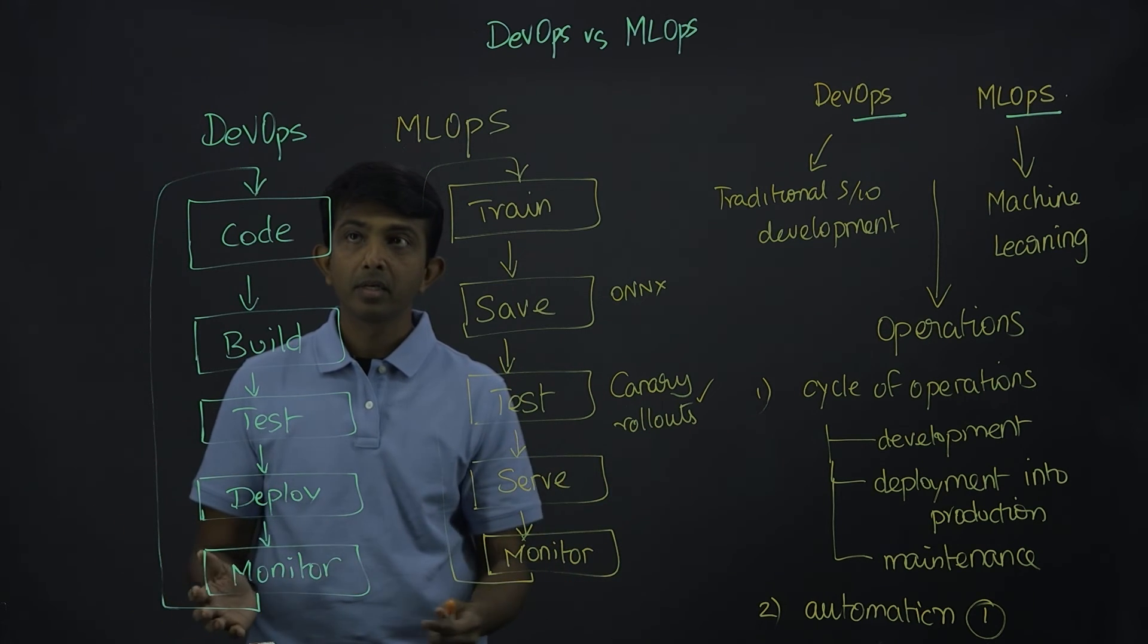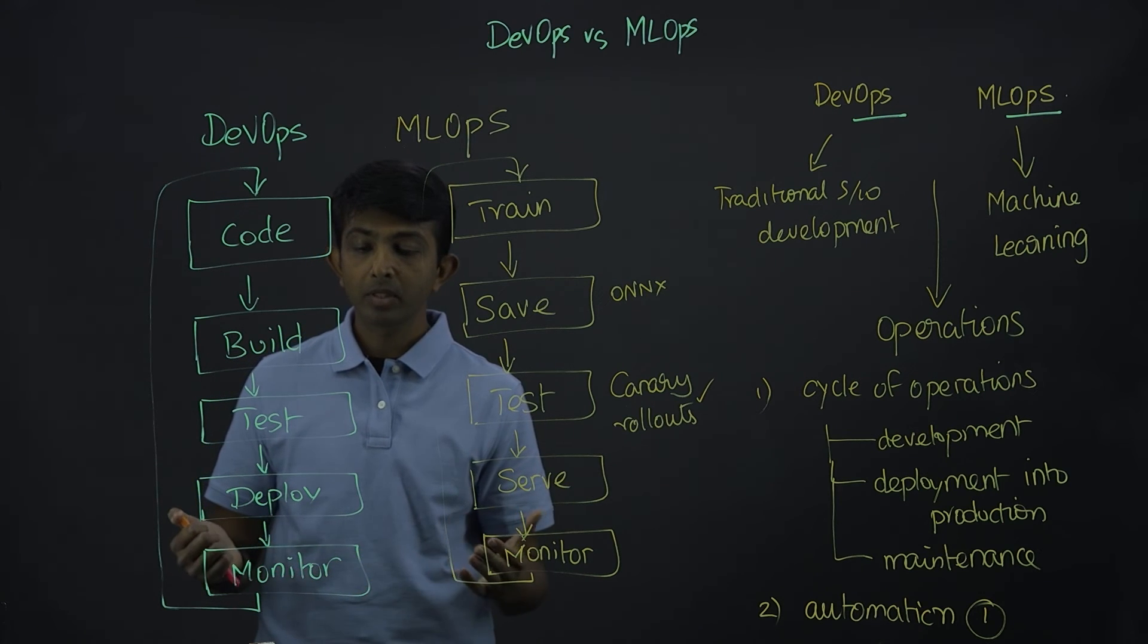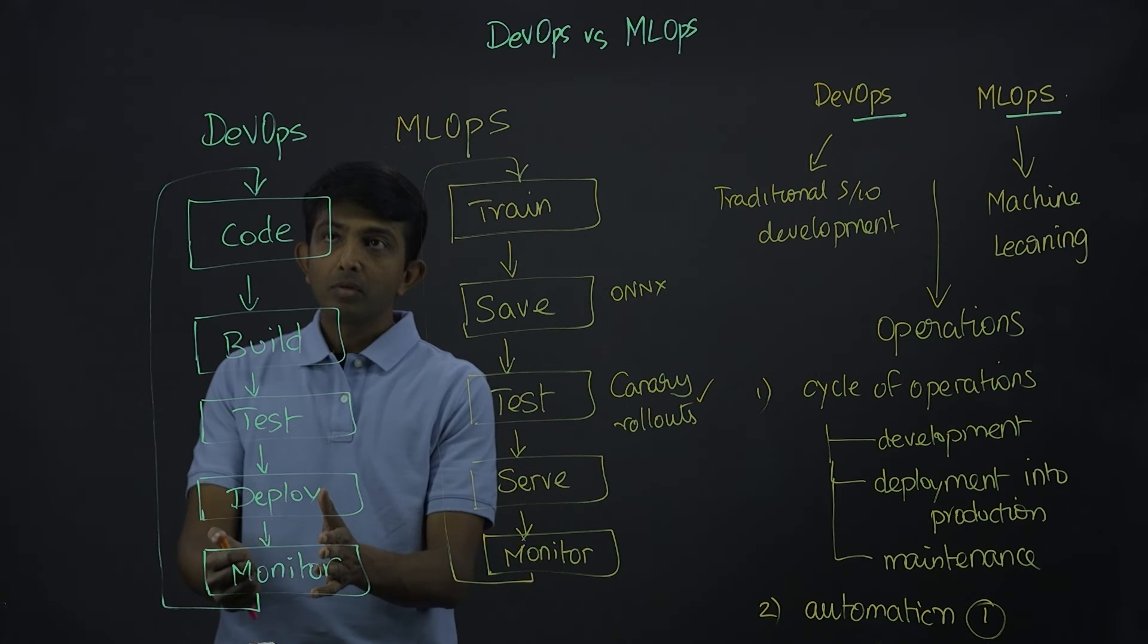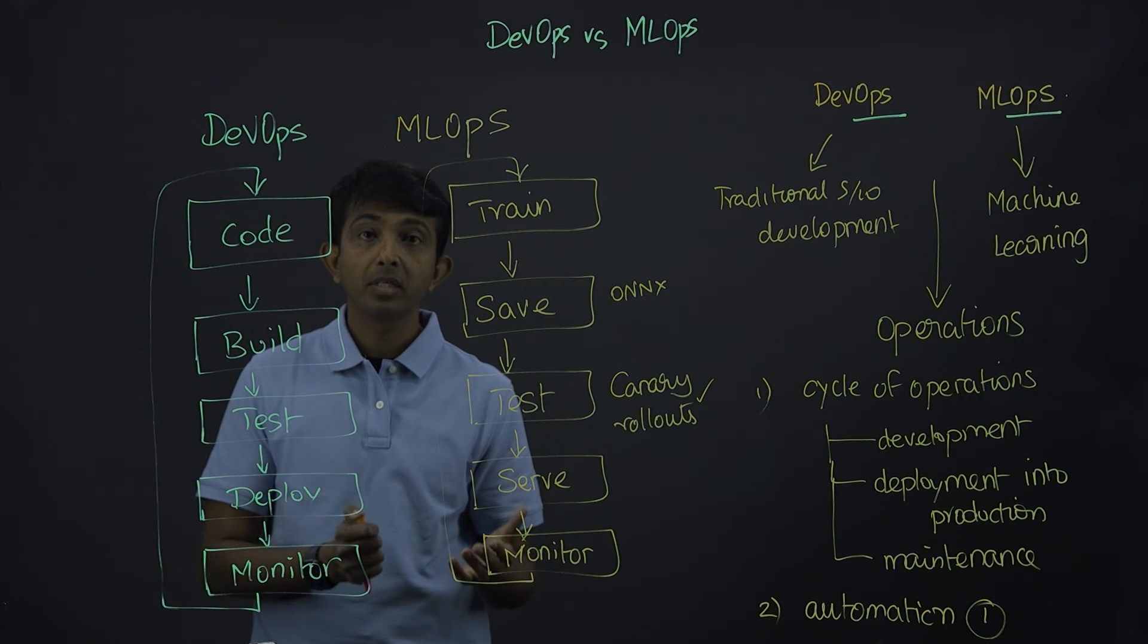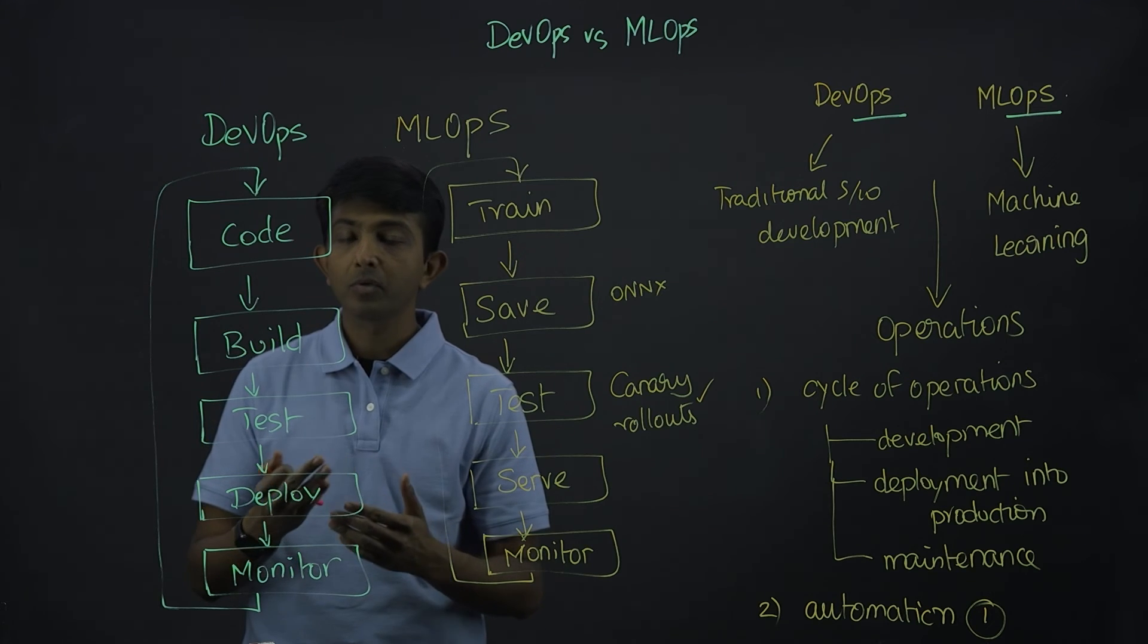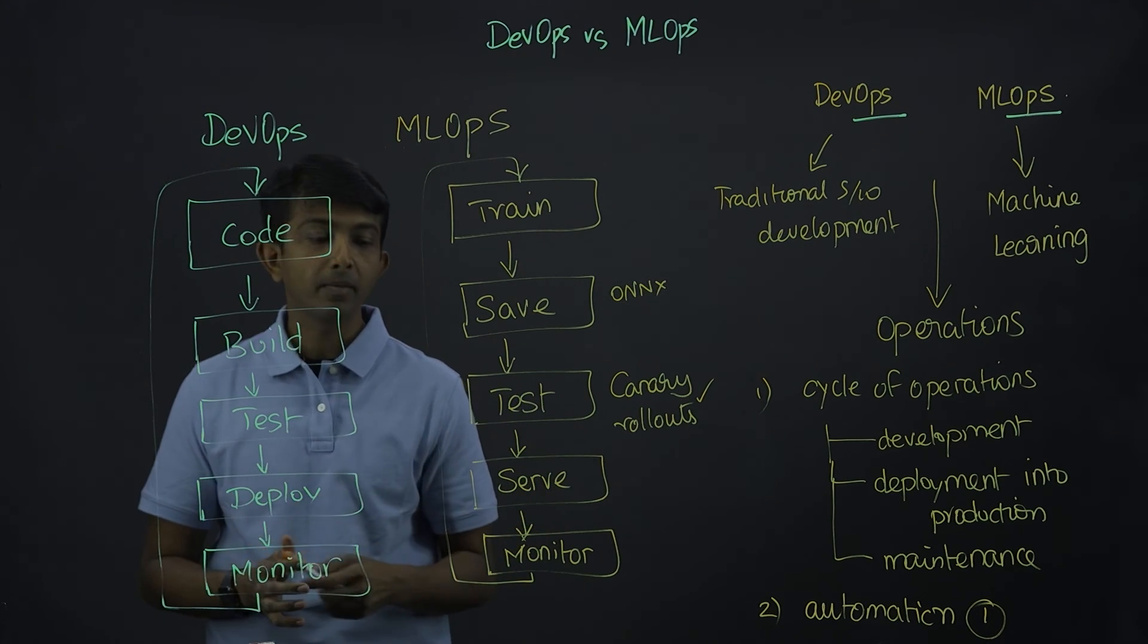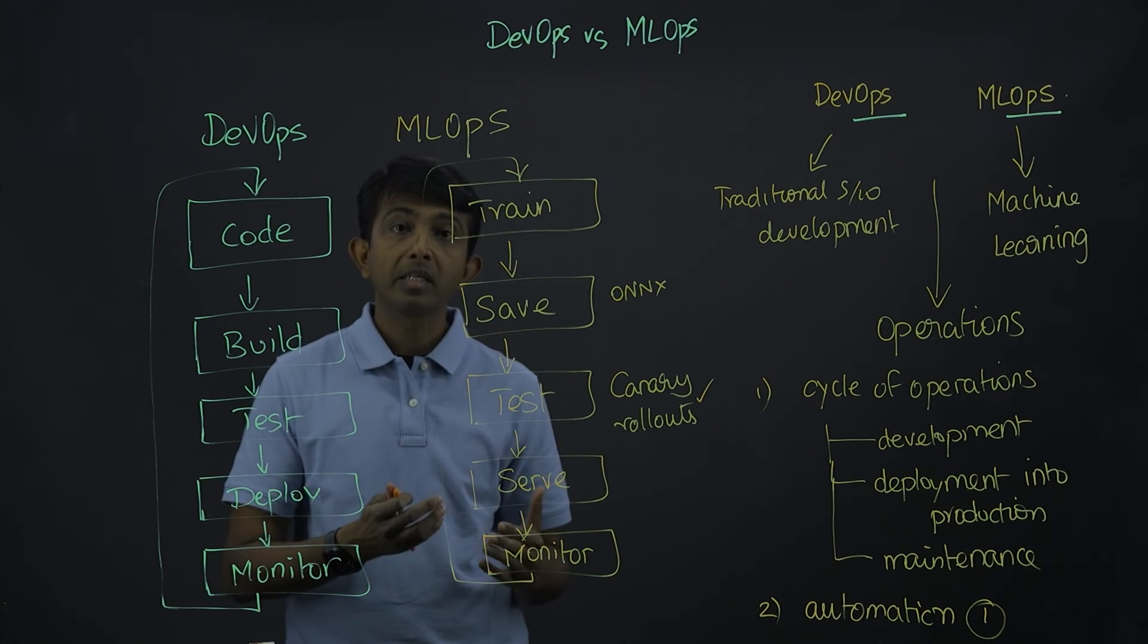We need to monitor it. With DevOps or traditional software application, we are monitoring the performance of it. And one big difference here is, with traditional software application, the code is not going to degrade. You could have new functionality requirements, you could have new performance requirements, but the code itself is going to stay the same. But with machine learning, over a period of time, the code could actually degrade.